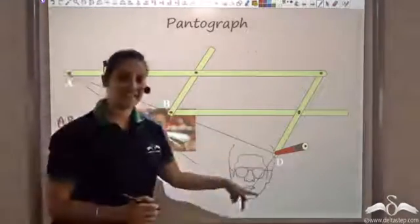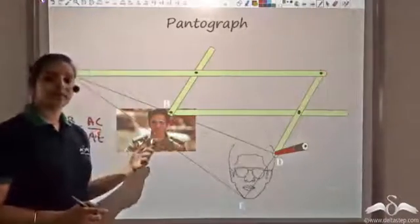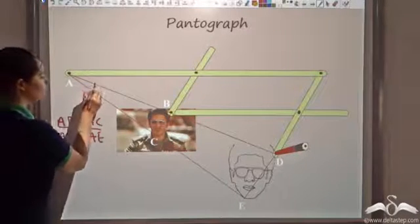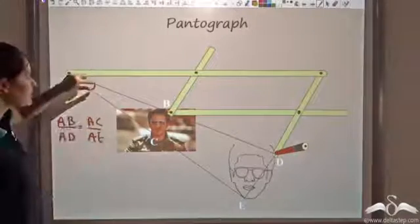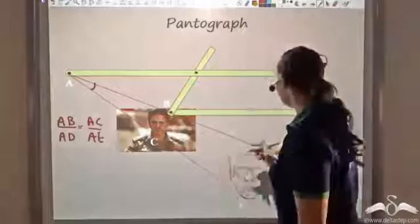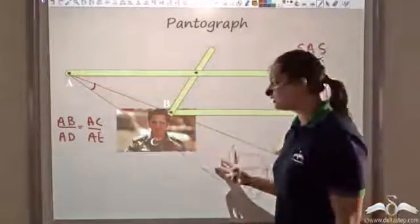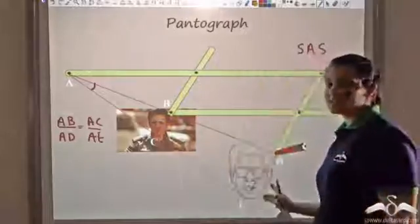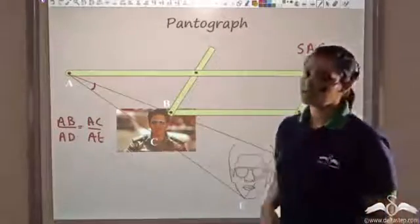BC and DE are corresponding points of the similar images. You can take any two points and their corresponding points and draw triangles. This ratio is always the same, and angle A is common to both the small and large triangles — it is included between the proportional sides. So by Side-Angle-Side, the two triangles are similar, their sides are proportional, and DE is proportional to BC — it is simply an enlargement of BC. This is how similarity is used in the pantograph.